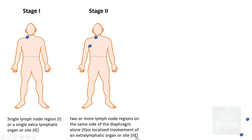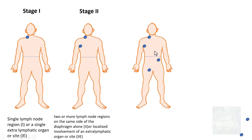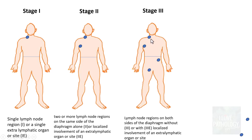When extra-lymphatic organ involvement is present it is denoted by the letter E. Stage three involves lymph node regions on both sides of the diaphragm — for example, cervical, axillary, inguinal, and abdominal lymph nodes on either side. It can be without or with localized involvement of an extra-lymphatic organ. The key difference between stage two and stage three is that stage two is only on one side of the diaphragm, whereas stage three involves both sides.